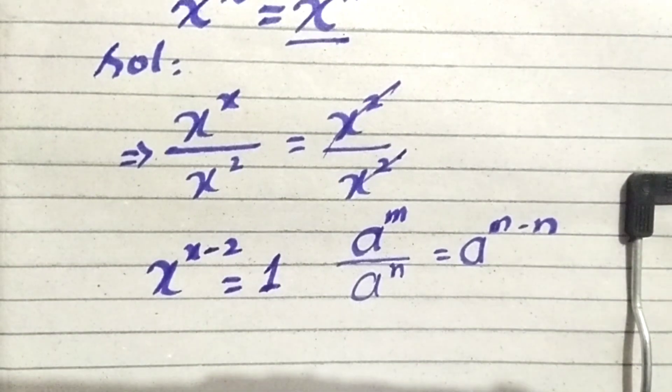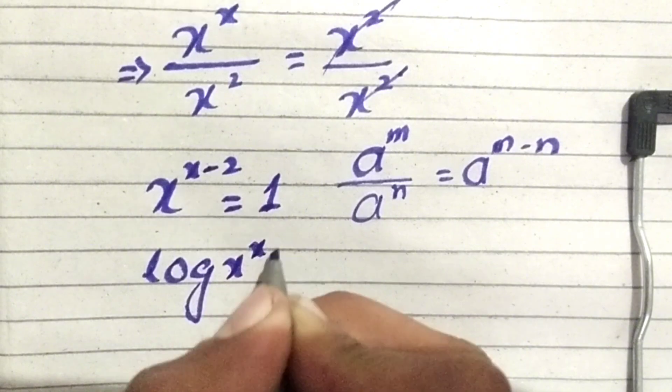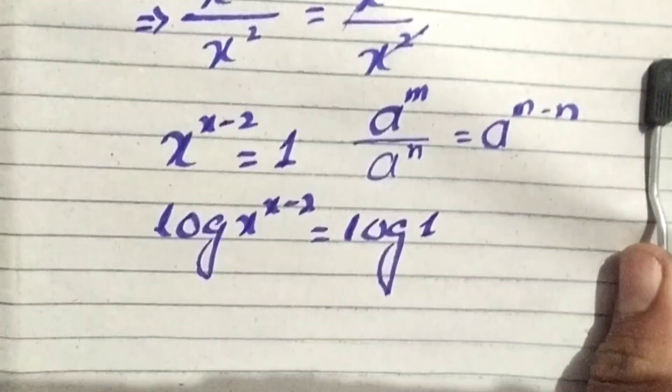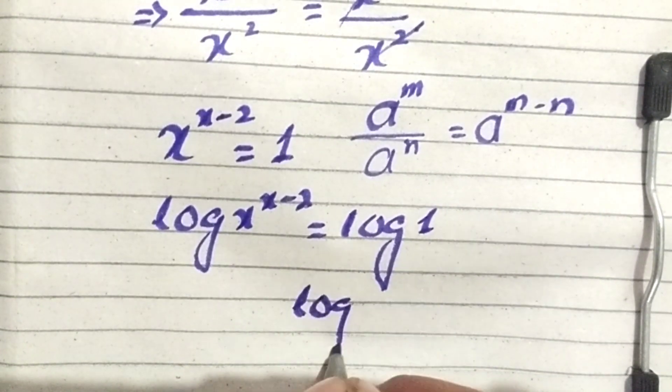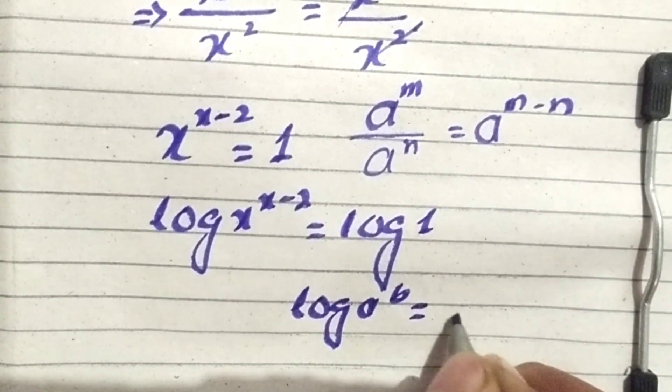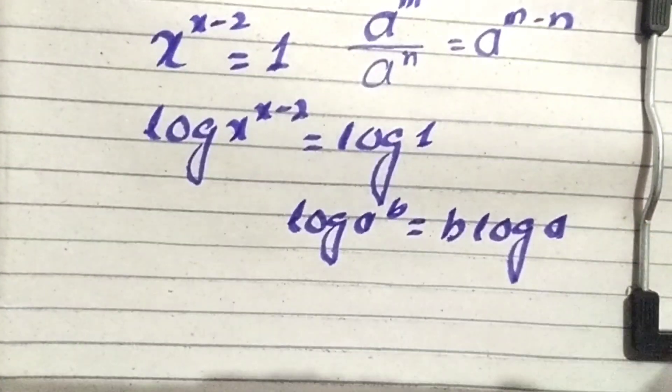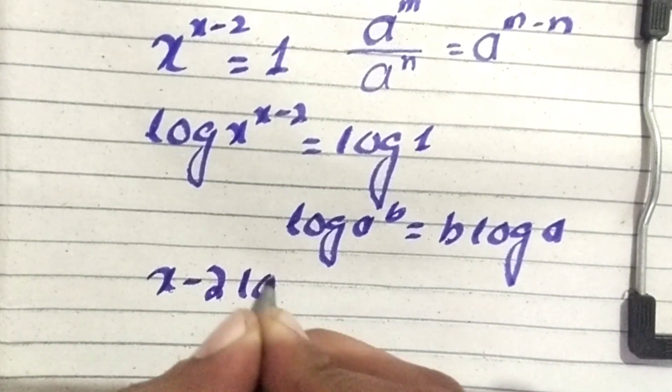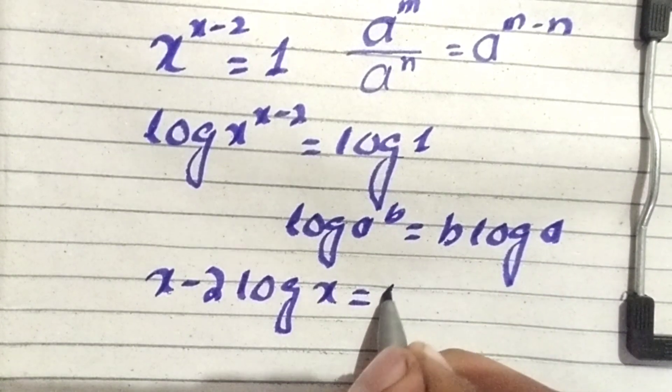Now take the logarithm on both sides. Log of x power x minus 2 is equal to log of 1. We have the logarithm property that log of a power b is equal to b times log of a. The equation becomes x minus 2 log of x is equal to log of 1, which is equal to 0.